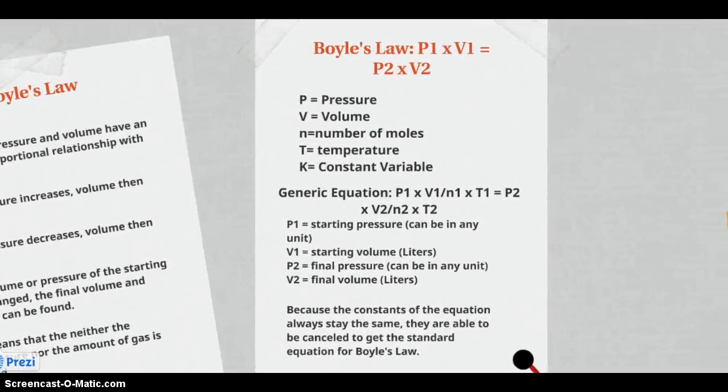The Boyle's Law equation is P1 times V1 equals P2 times V2. P equals pressure, V equals volume, K equals the constant variable, T equals temperature, and N equals the number of moles.